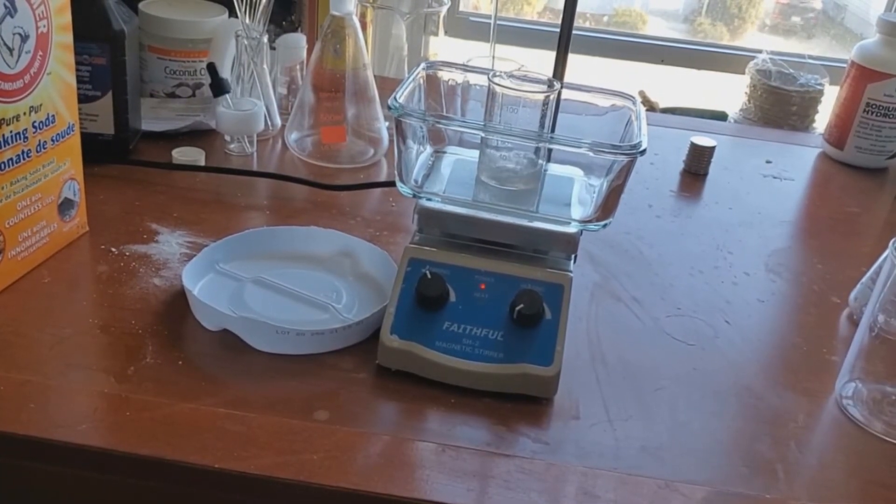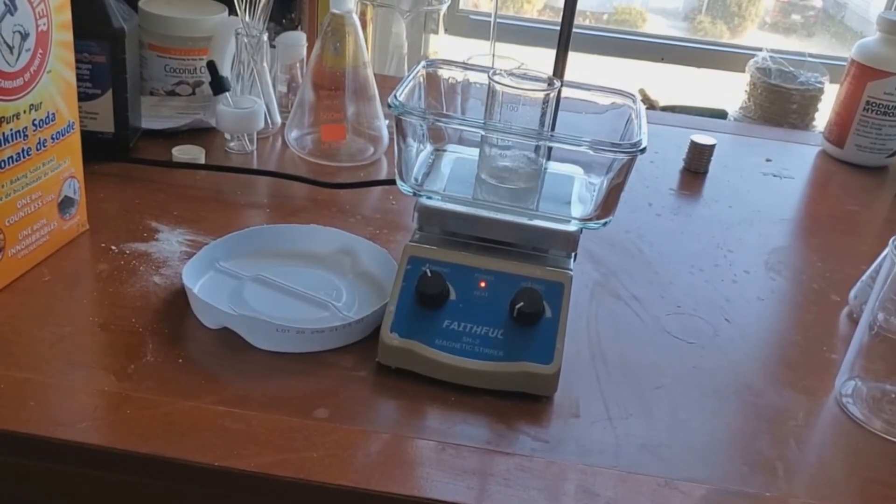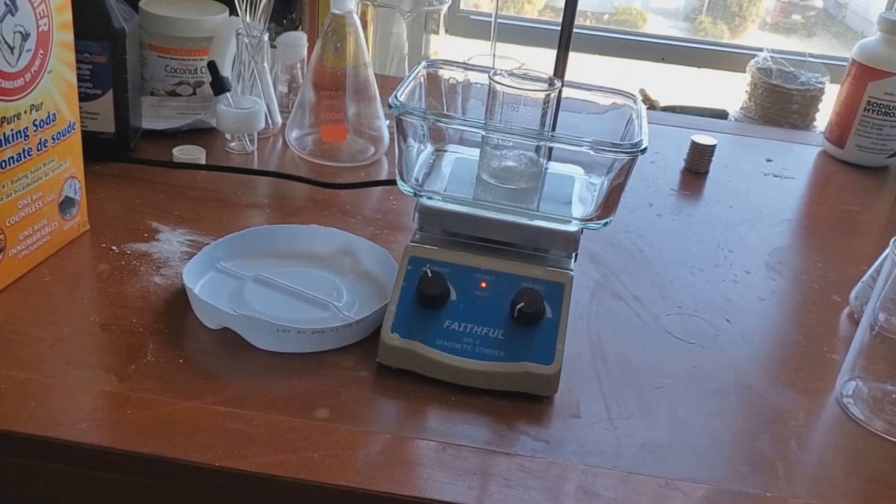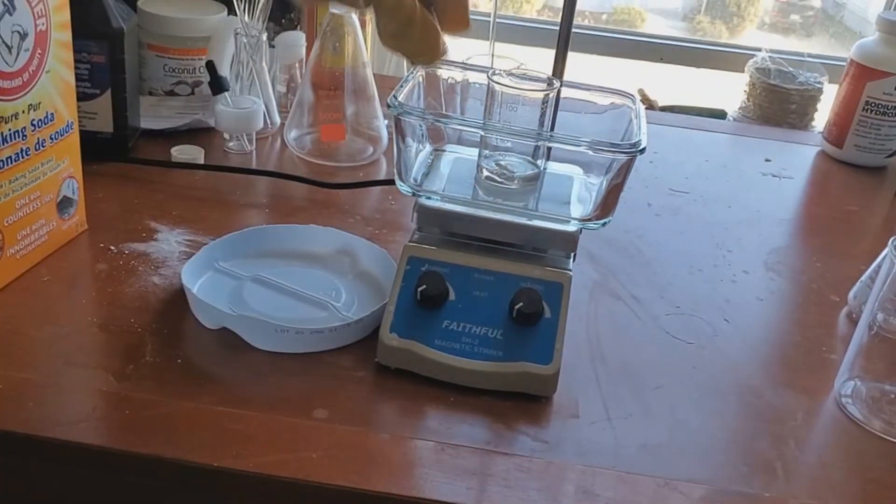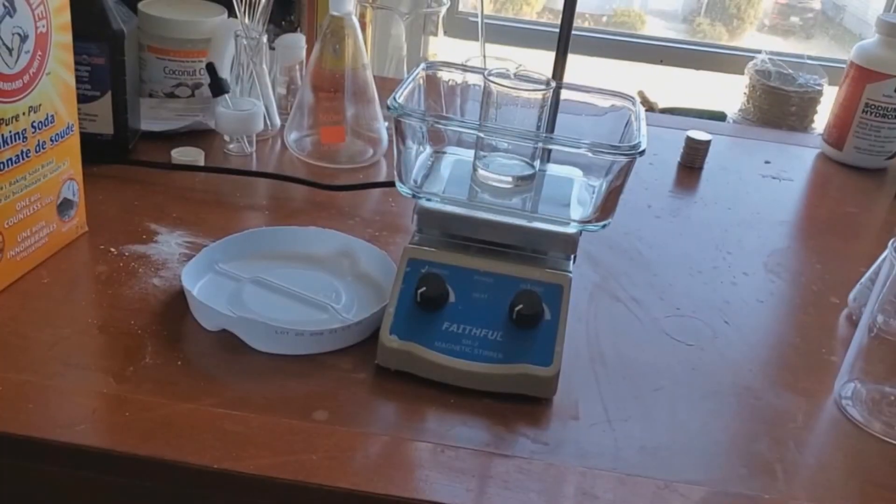Piranha solution is typically not stored, and it's made and then used right away, because it is a super strong acid and one of the strongest oxidizers. It reacts quickly with organic material, and because of that, it is used in labs to clean glassware and stubborn oxidizers that won't come out.